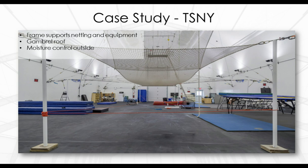This building was designed for Trapeze School of New York, allowing trapeze, trampoline, and acrobatic classes in any conditions. The gambrel roof shape allows students to fly to the top of the building without obstructions or safety concerns. The trapeze rig and netting are incorporated into the building loads, and the building is finished with R-30 insulation, a polyethylene fabric liner on the inside, and gutters and downspouts on the outside.